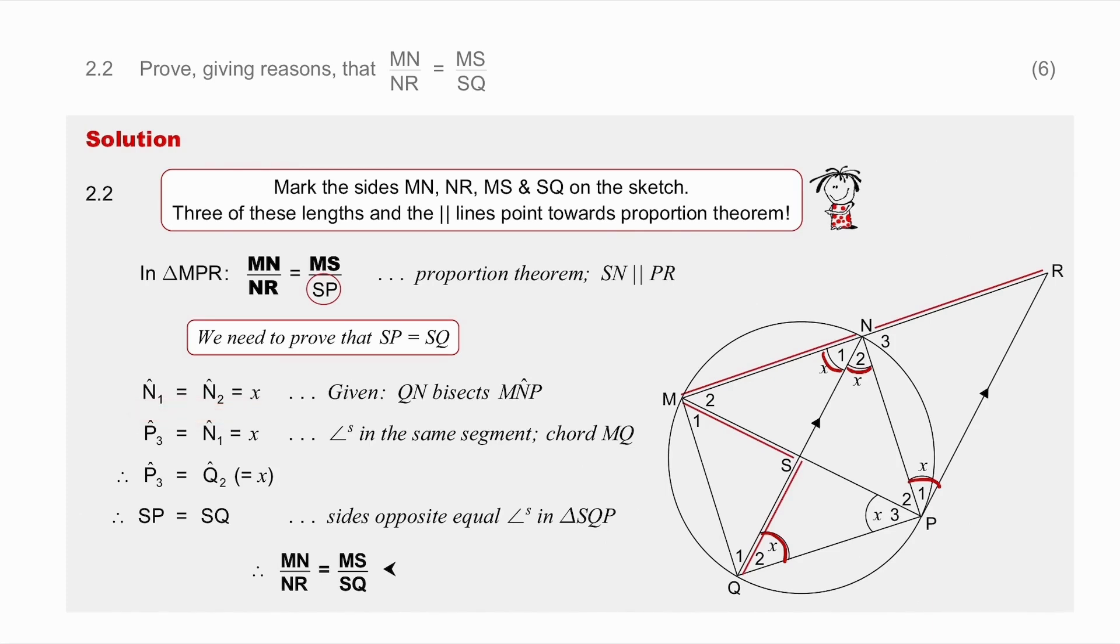I then have angle MNQ and angle MPQ are angles in the same segment. So if angle N1 is x then angle P3 is going to be x. So angle P3 is x because of angles in the same segment.